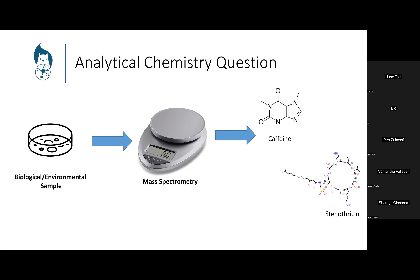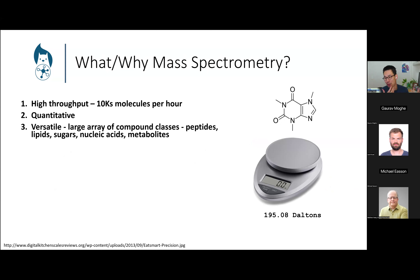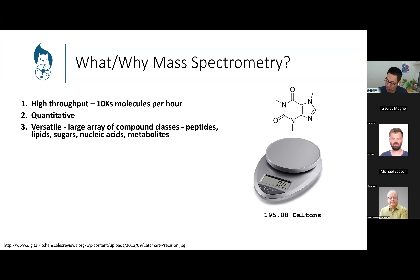The technology we use is mass spectrometry. At a very high level, I always envision it as a very fancy, very expensive scale — instead of weighing things like an onion, we weigh small molecules like caffeine, antibiotics, or secondary metabolites. Mass spectrometry is pretty high throughput — tens of thousands of molecules per hour — it can be quantitative, and it's very versatile, able to measure peptides, lipids, sugars, nucleic acids, and other small molecule metabolites.